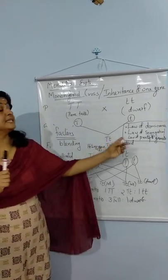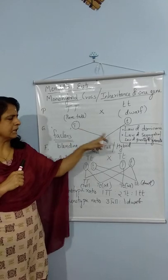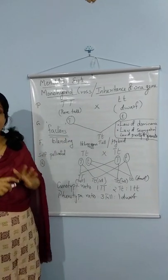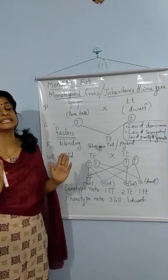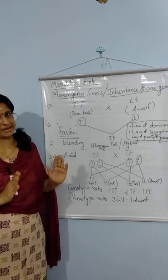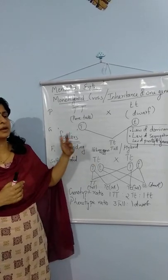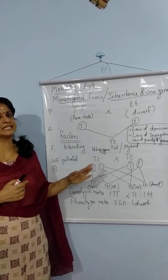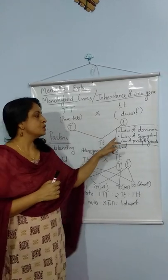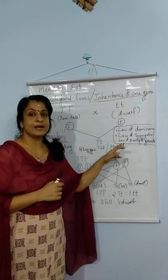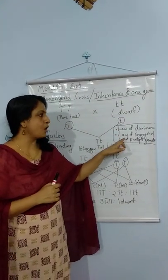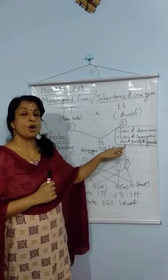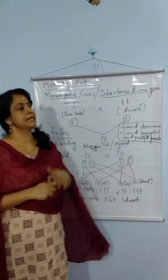Now coming to the second law. The second law of Mendel is known as the universally accepted law, because the other laws of Mendel show deviations that we will study later in this chapter. The second law is called the Law of Segregation. It is also called the Law of Purity of Gametes.